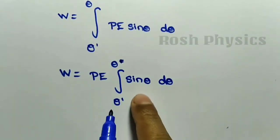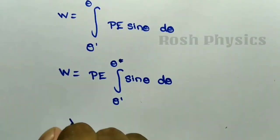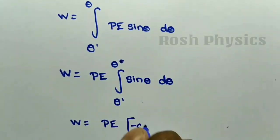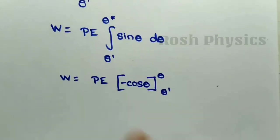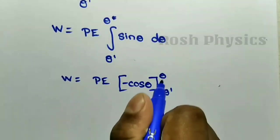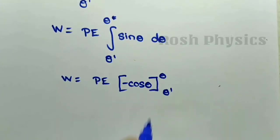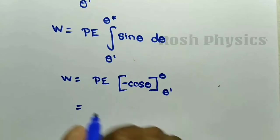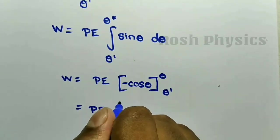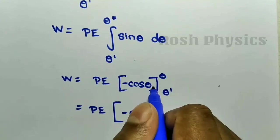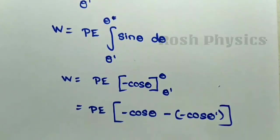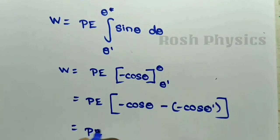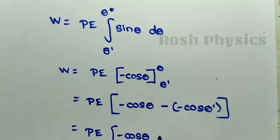Integrating sinθ gives −cosθ. So W becomes pE [−cosθ] evaluated from θ' to θ. Applying the limits — upper limit minus lower limit — gives W = pE(−cosθ − (−cosθ')) = pE(−cosθ + cosθ').